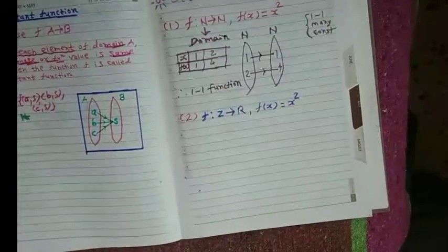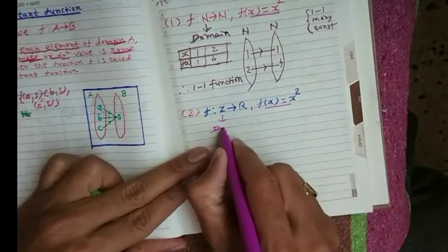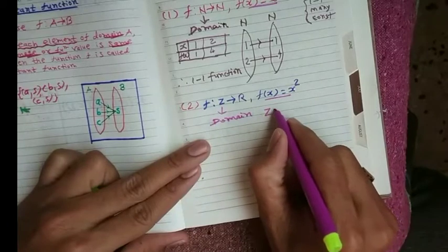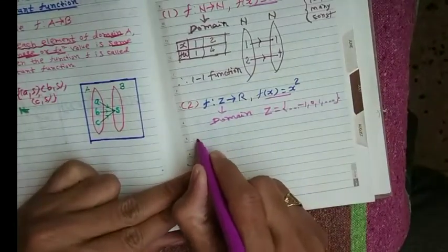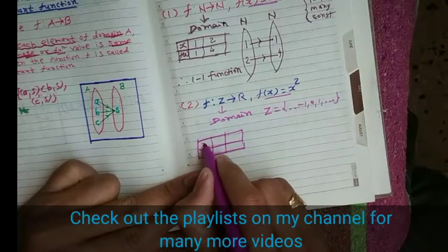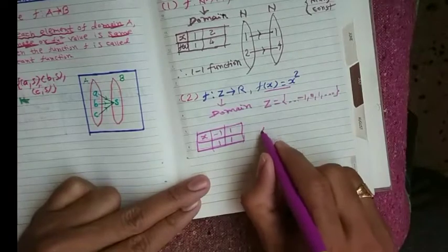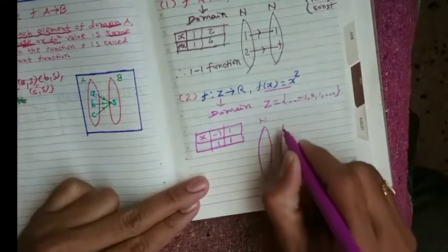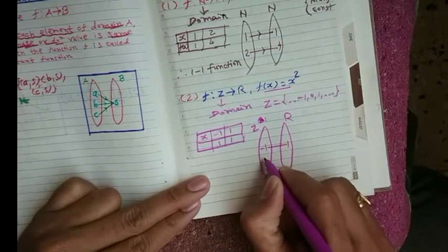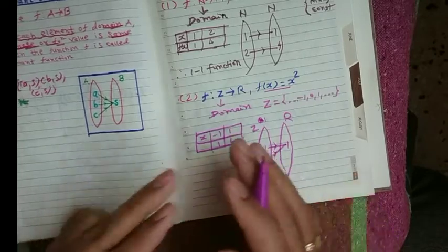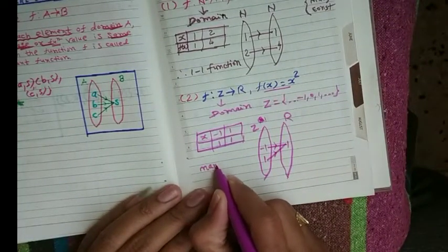Second: f: Z → R, f(x) = x². The question is the same but the domain is now Z, which includes all integers from minus infinity to plus infinity, including zero. Drawing a table: when x = −1, f(x) = (−1)² = 1; when x = 1, f(x) = 1² = 1. Choosing different values from the domain gives the same image, so this is a many-one function.